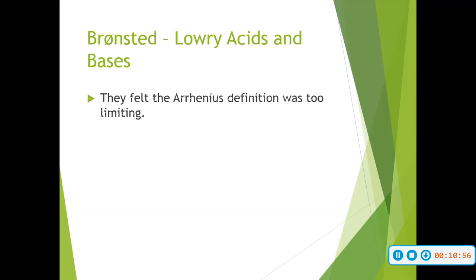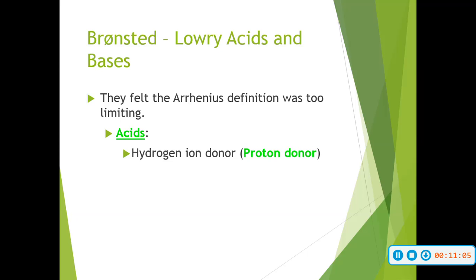Bronsted and Lowry felt that the Arrhenius definition was too limiting, so they took it a step further. They defined acids as a hydrogen ion donor or a proton donor, and then bases as a hydrogen ion acceptor.